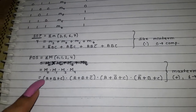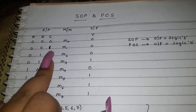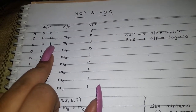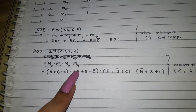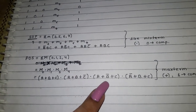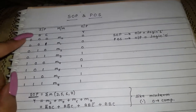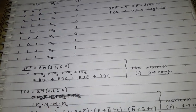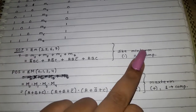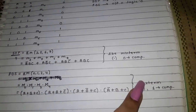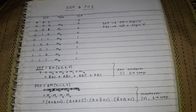For M1, C is 1 so C will be complemented, while A and B remain as they are. The same rule applies for M2 and M4. When you write all these out, you get the POS form for this particular truth table. To summarize: SOP follows minterm and POS follows maxterm; in maxterm, 1 is complemented, and in minterm, 0 is complemented. This is all for SOP and POS forms.